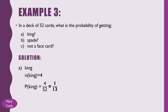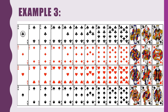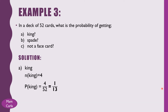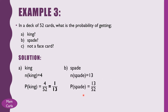Now let us solve for the probability of getting a spade. There are 13 spades in the deck. So the probability of getting a spade is 13 over 52, or simply 1/4.